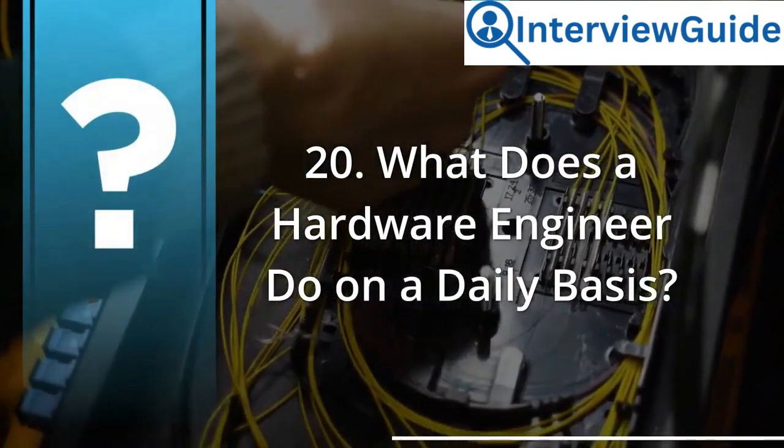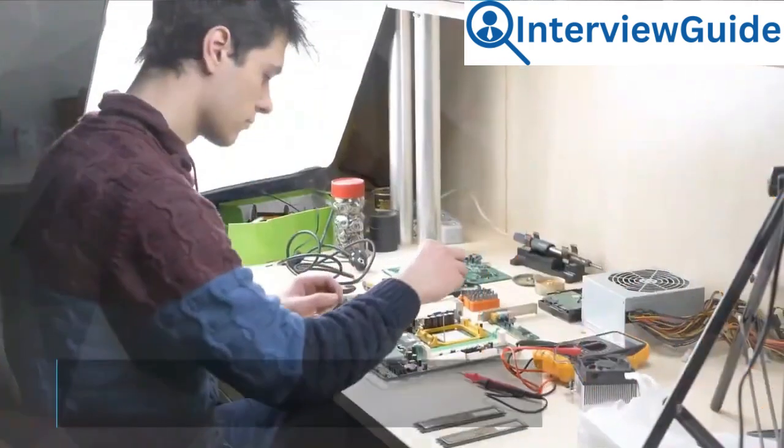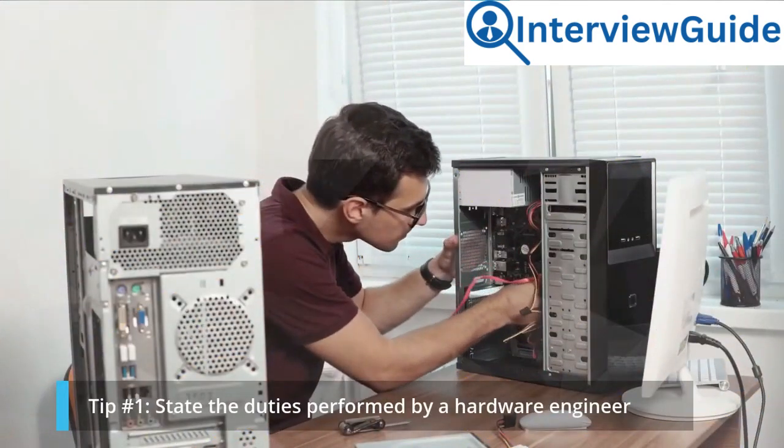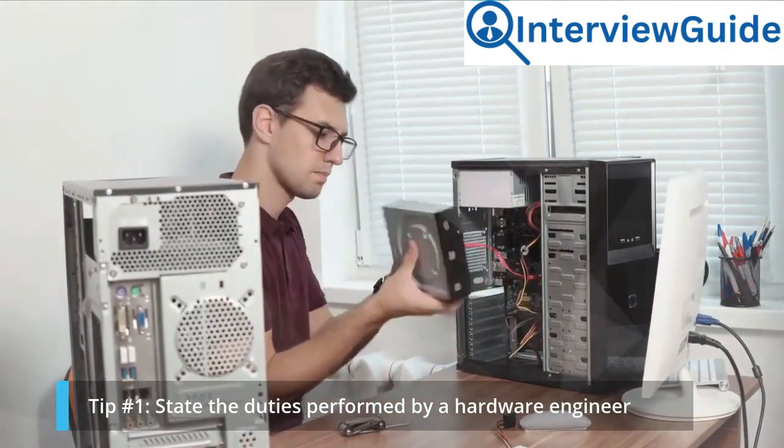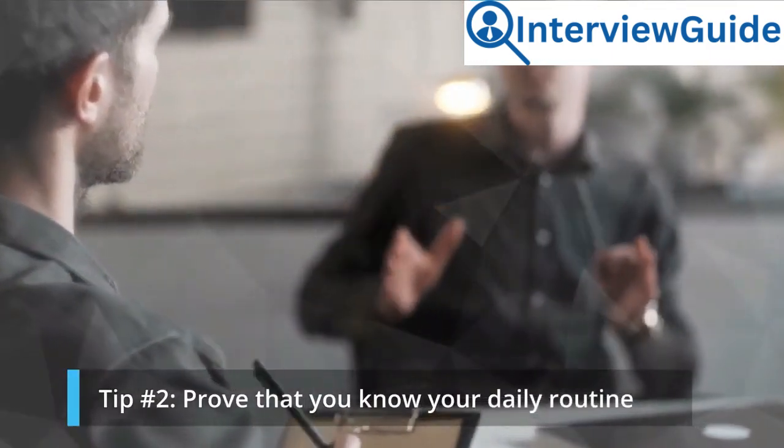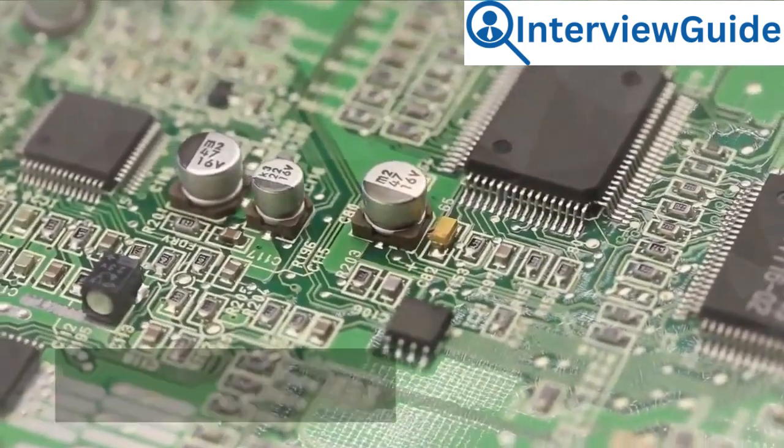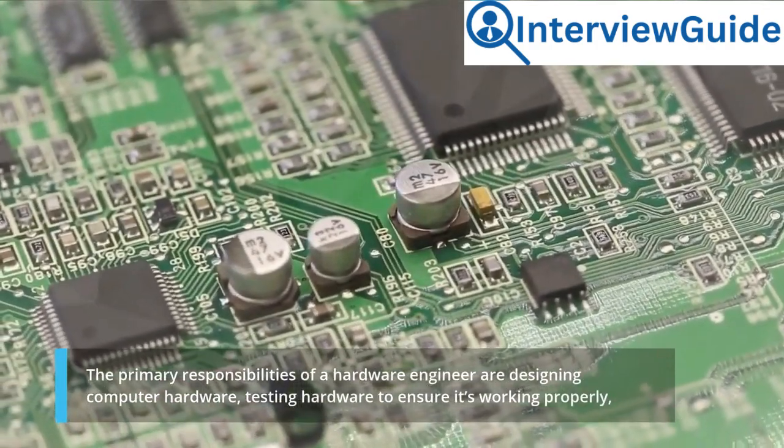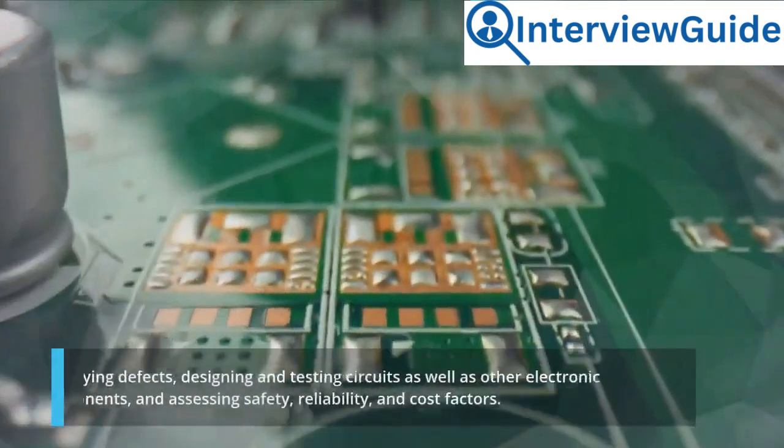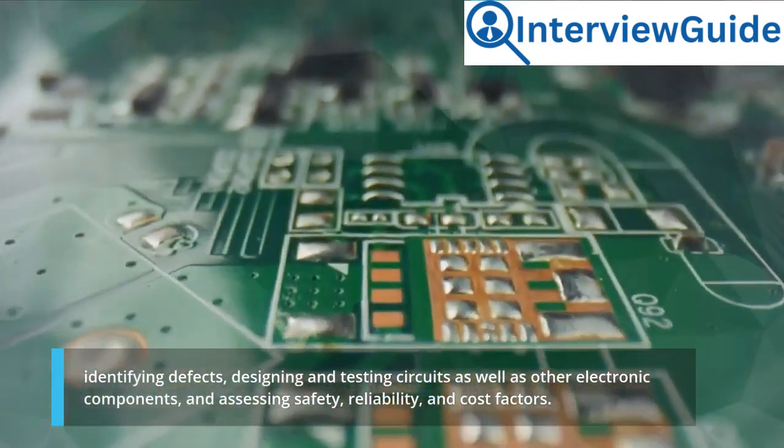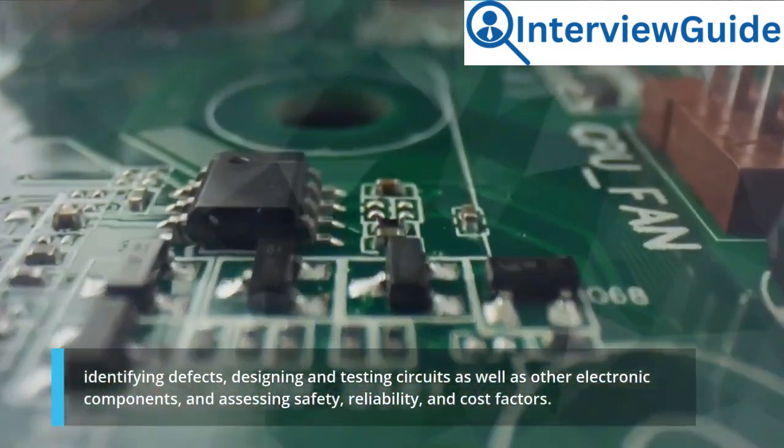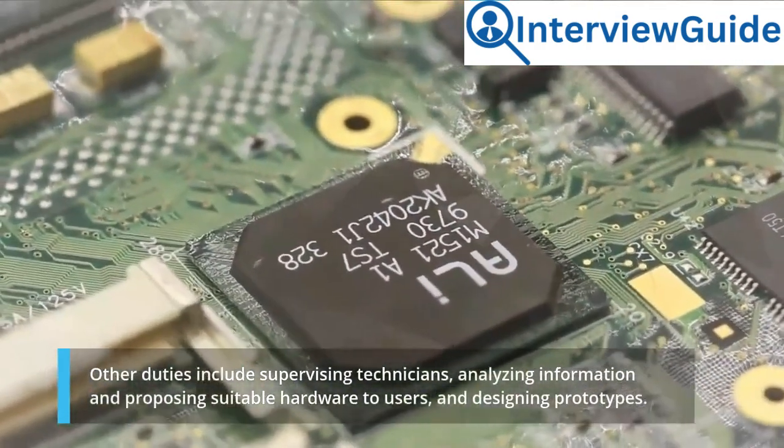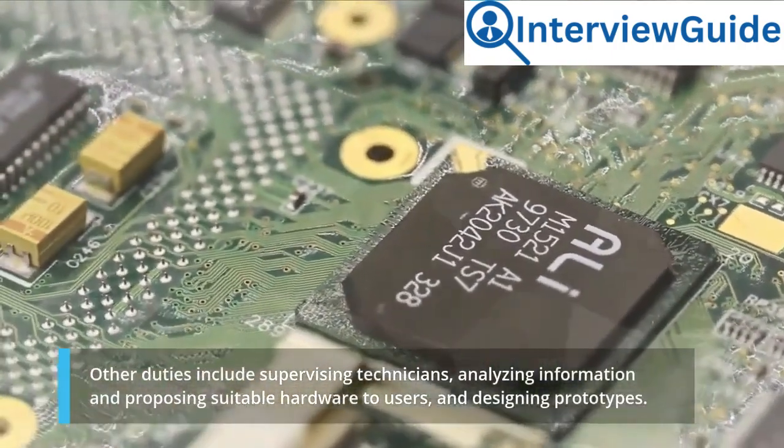Question 20: What does a hardware engineer do on a daily basis? This question is meant to test your familiarity with the daily routine of a hardware engineer. Tip number 1: state the duties performed by a hardware engineer. Tip number 2: prove that you know your daily routine. Sample answer: The primary responsibilities of a hardware engineer are designing computer hardware, testing hardware to ensure it's working properly, identifying defects, designing and testing circuits as well as other electronic components, and assessing safety, reliability, and cost factors. Other duties include supervising technicians, analyzing information and proposing suitable hardware to users, and designing prototypes.